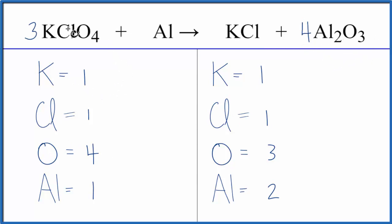So now I have the four times the three oxygens, that gives me twelve, and then I have the three times the four oxygens, and that gives me twelve. So I've balanced the oxygens.